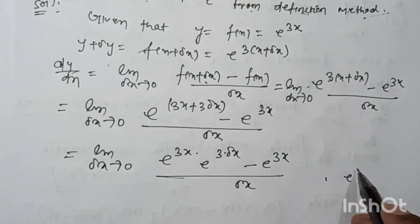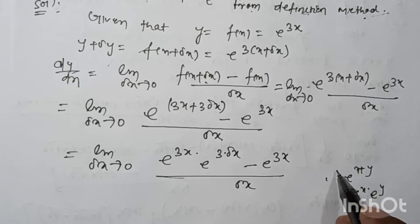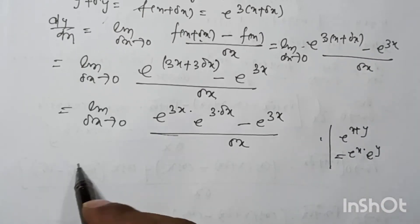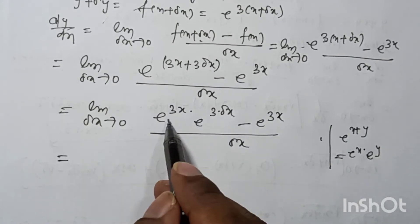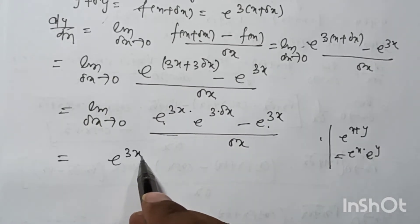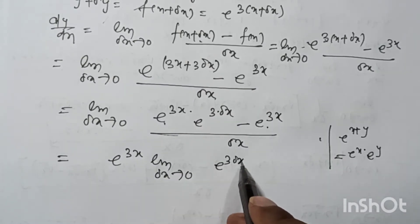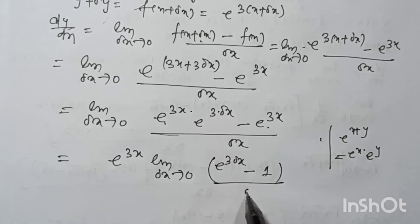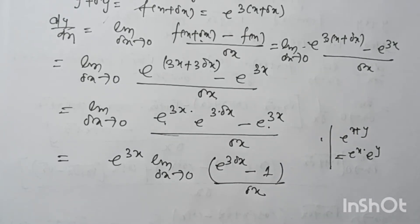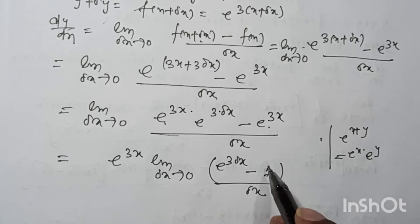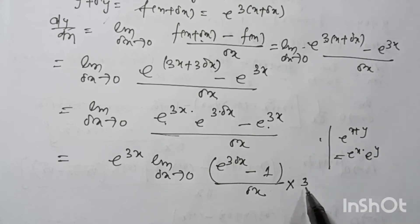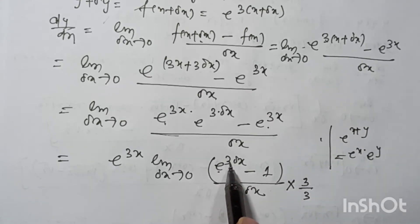We can write e to the power (x + y) as e to the power x times e to the power y, by the exponential function property. So e to the power 3x is the common factor, giving: limit as δx tends to 0 of e to the power 3x times (e to the power 3δx minus 1) divided by δx.